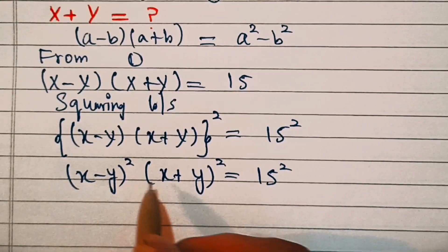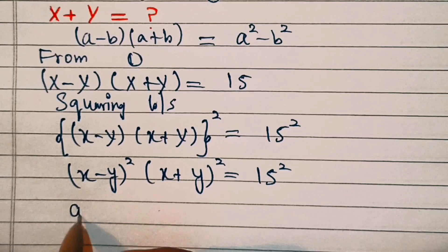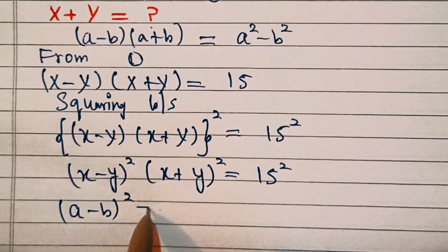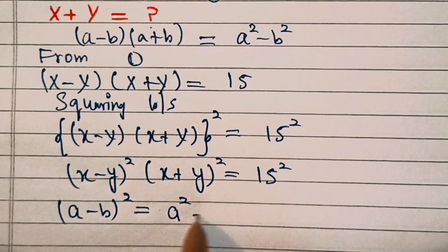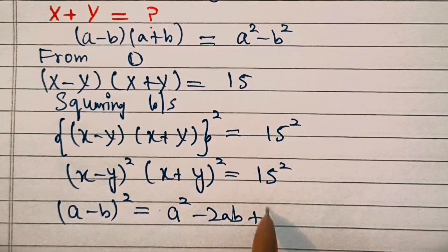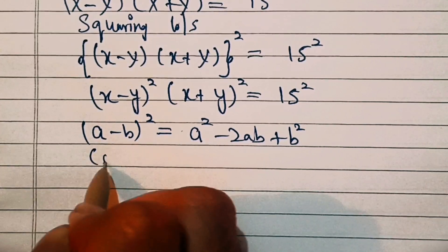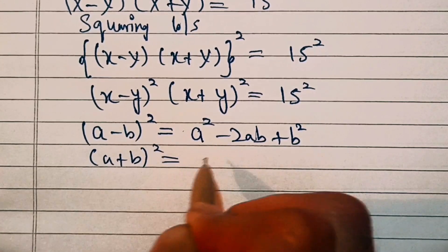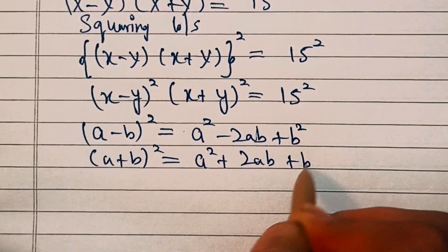Now here are two algebraic identities. First: (a minus b) whole squared equals a squared minus 2ab plus b squared. And (a plus b) whole squared equals a squared plus 2ab plus b squared.